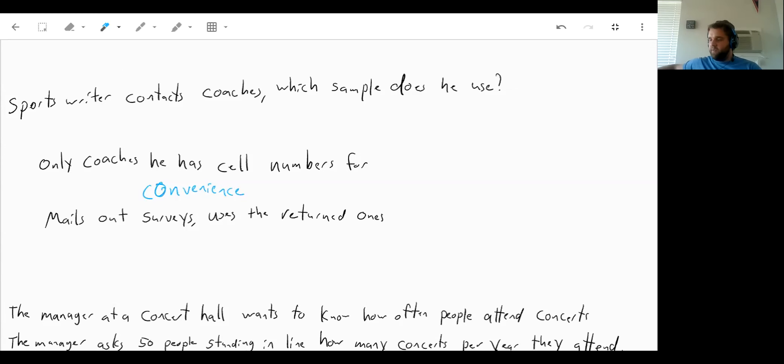Or the sports writer mailed out surveys to all the coaches and just uses the surveys that are returned. Well, even though he surveyed all of the coaches, the only ones that got returned are the self-selected ones. So that's a self-selected sample. Because the coaches only responded if they wanted to or not.